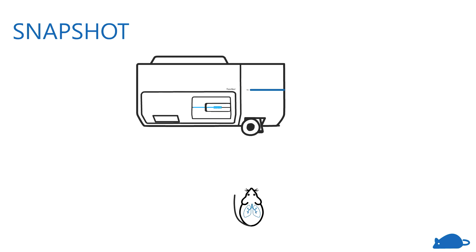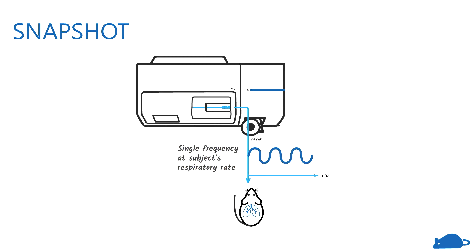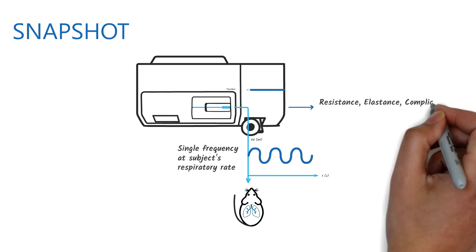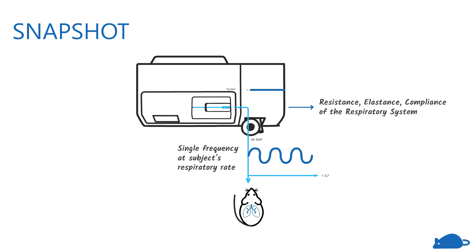In the snapshot measurement, the lungs are given a single frequency signal matched to the subject's respiratory rate. Using the signal, the flexiVent calculates the resistance, elastance, and compliance of the respiratory system.